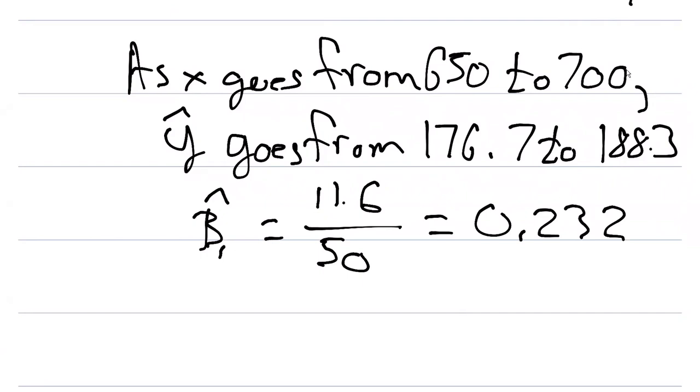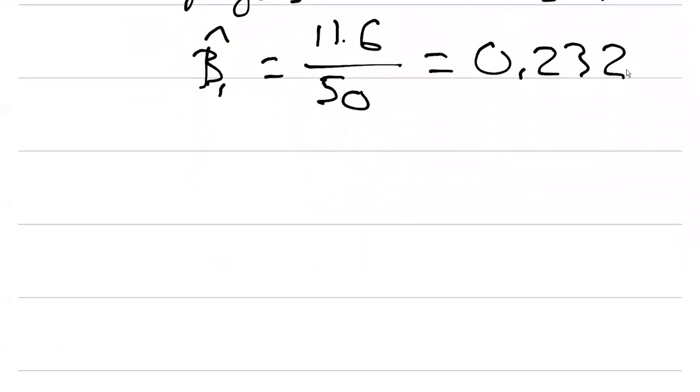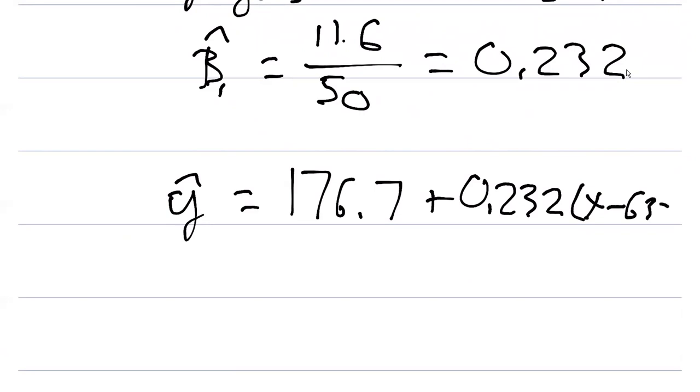And so then the equation that we can write goes something like this. We could say that y hat is going to equal 176.7 plus 0.232 times x minus 650. So this again is centering our regression equation when we take any value x minus 650.